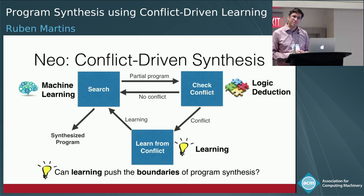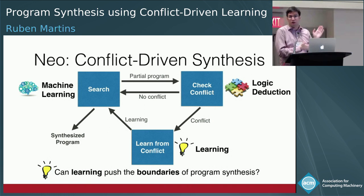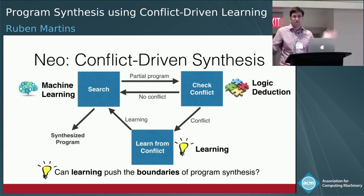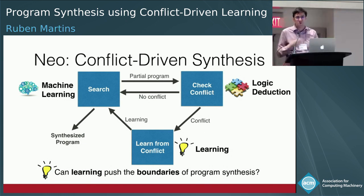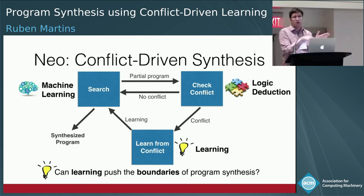A question about robustness to noisy data: since the search engine can accept any machine learning algorithm, you can substitute other heuristics if data is noisy or insufficient. SAT solvers, for example, use basic heuristics rather than machine learning. Machine learning is used here because it helps when data is available, but the framework still works without it.